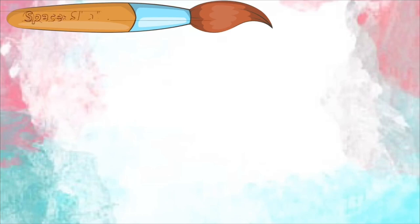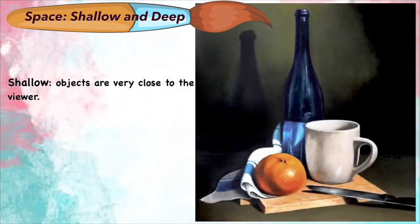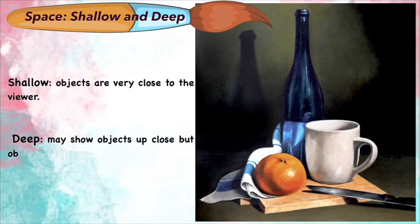Space: shallow and deep. Shallow—objects are very close to the viewer. Look at this picture. And deep—not just objects up close, but objects are shown far away too. Look at this sample.